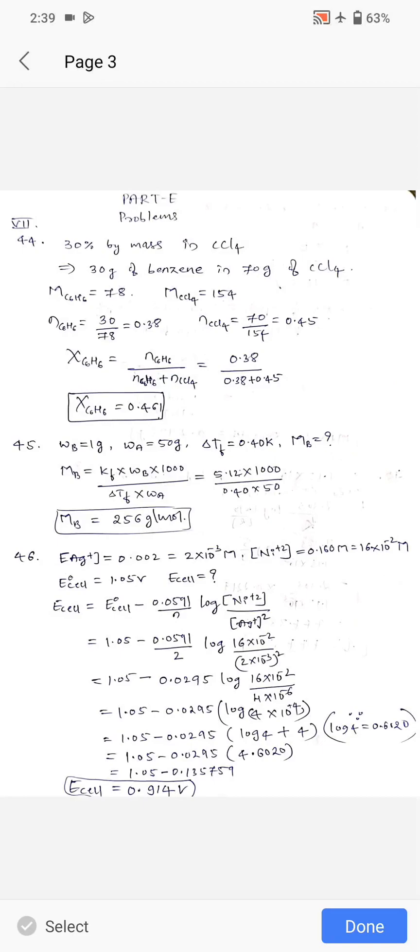Question number 45, same question I explained in my previous video. Weight of solute is 1 gram, weight of solvent is 50 gram, delta Tf depression in freezing point is 0.40 Kelvin. Calculate Mb. Mb equals Kf into Wb into 1000 divided by delta Tf into Wa. Put all the values, you will get 256 gram per mole as an answer. I hope all of you got the same answer, please comment below.